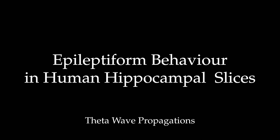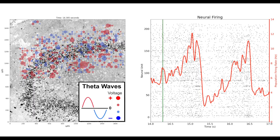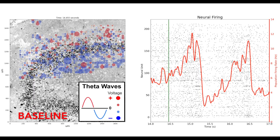This video displays the theta wave dynamics of a thousand electrodes recording from human hippocampal brain slices at the onset of seizure-like activity.